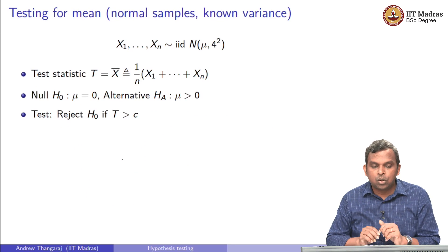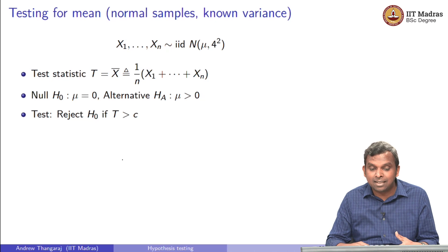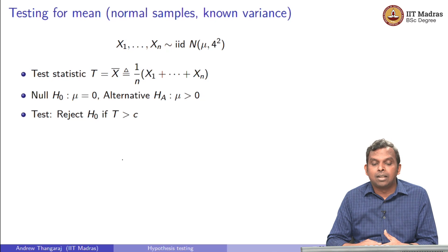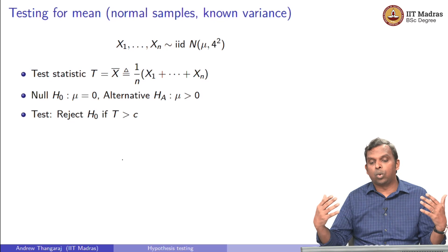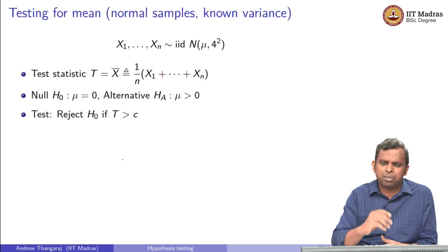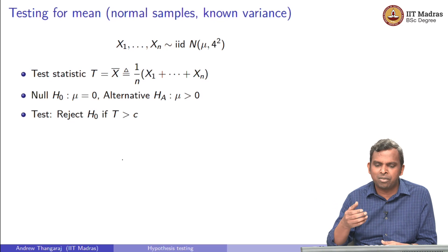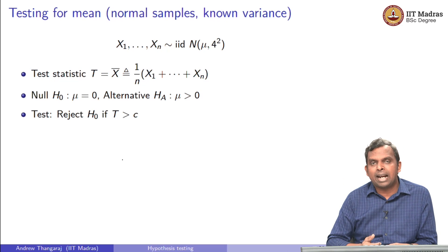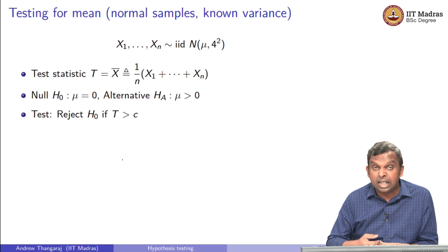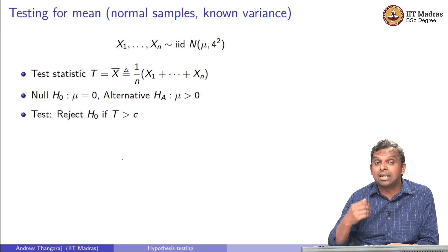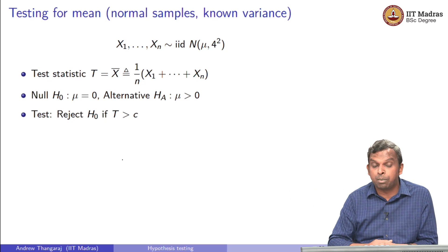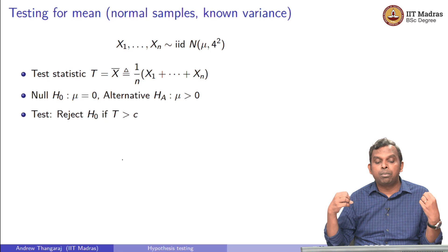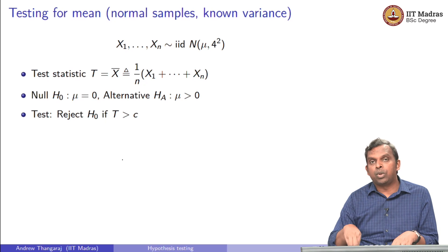Now let us go through and see what happens with the Z test. The Z test typically applies — or is usually used — with normal samples where you are testing for the mean and the variance is known. Here is a typical example: I have picked the number 4 for variance, but you can replace it with sigma squared. You have n random samples, iid normal with mean mu and variance 4 squared. Your test statistic in this Z test is always going to be the sample mean X-bar = (1/n)(x₁ + x₂ + ... + xₙ). The null hypothesis is mu equals 0 and the alternative is mu greater than 0.